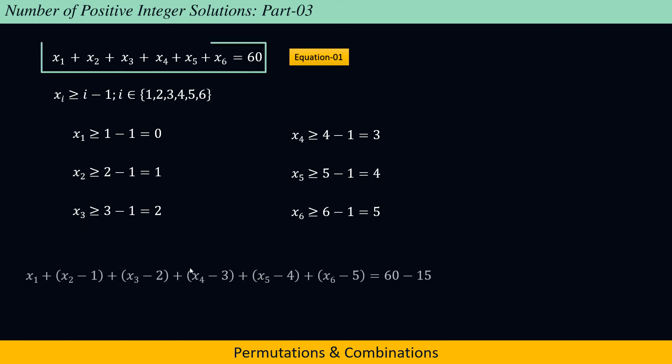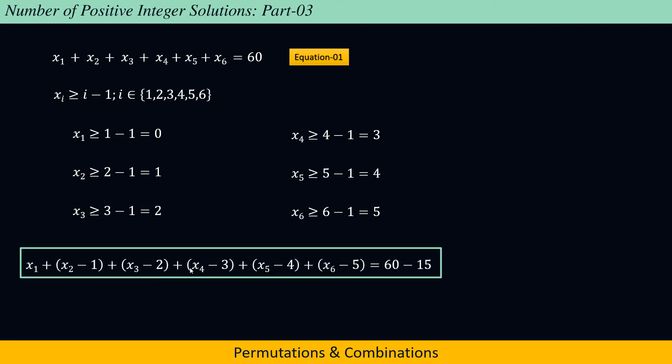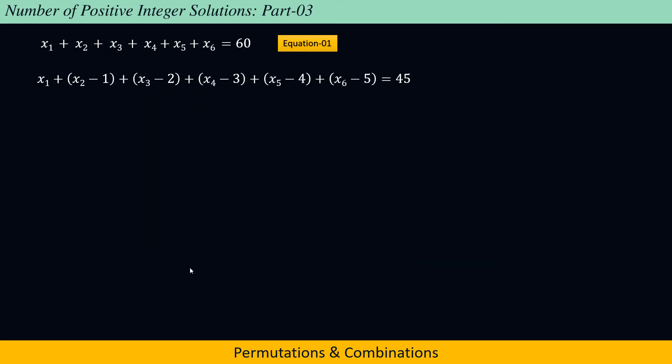We will rewrite the equation 1 in the form of x1 plus (x2 minus 1) plus (x3 minus 2) plus (x4 minus 3) plus (x5 minus 4) plus (x6 minus 5) equals 60 minus 15, which equals 45.